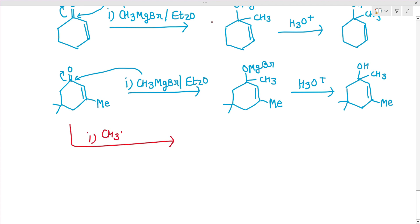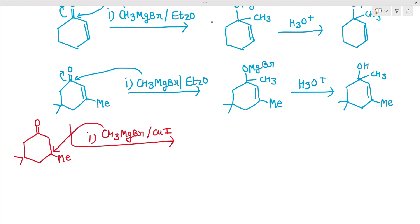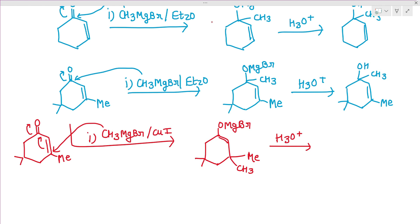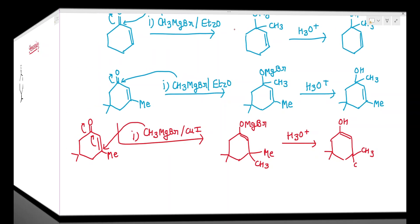Now if conditions change — same compound treated with CH₃MgBr in CuI — there will be 1,4-addition. The CH₃ group attacks at the β-position (position 4) because the bond migrates: the double bond shifts, leaving positive charge at position 2, and OMgBr ends up at the oxygen. After water hydrolysis we get OH at position 2 and CH₃ at the β-carbon.